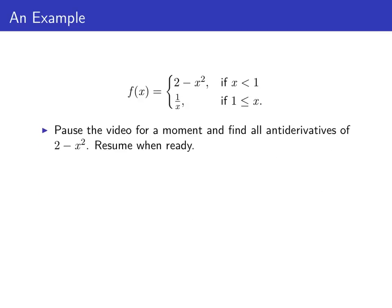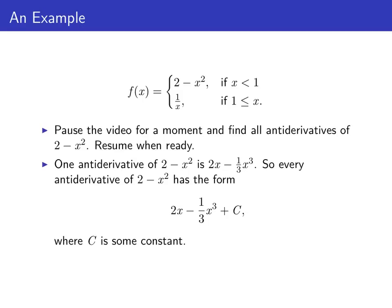We want to find antiderivatives for each piece of little f. The piece that defines little f on x less than 1 is 2 minus x squared. One antiderivative of 2 minus x squared is 2x minus 1 third x cubed, because the derivative of 2x minus 1 third x cubed is 2 minus x squared. Every antiderivative of 2 minus x squared has the form 2x minus 1 third x cubed plus c, where c is some constant.